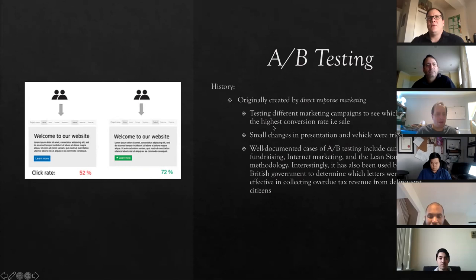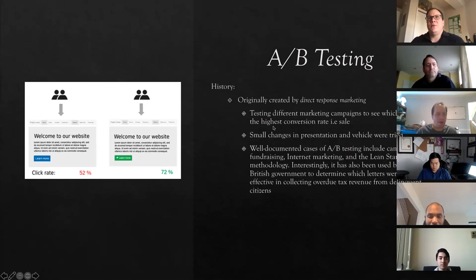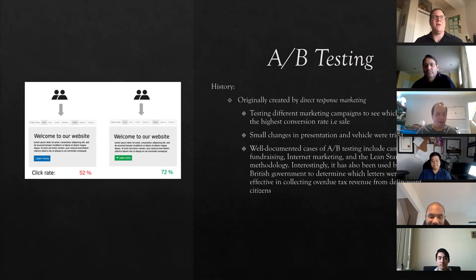One way to get direct feedback and more information about your products is to build it into the release or development process itself. This still falls under the second way. There are some approaches to design that can help you figure out whether or not you're meeting your business's objectives. A/B testing is one of those things. Has anyone had any experience doing A/B testing before?